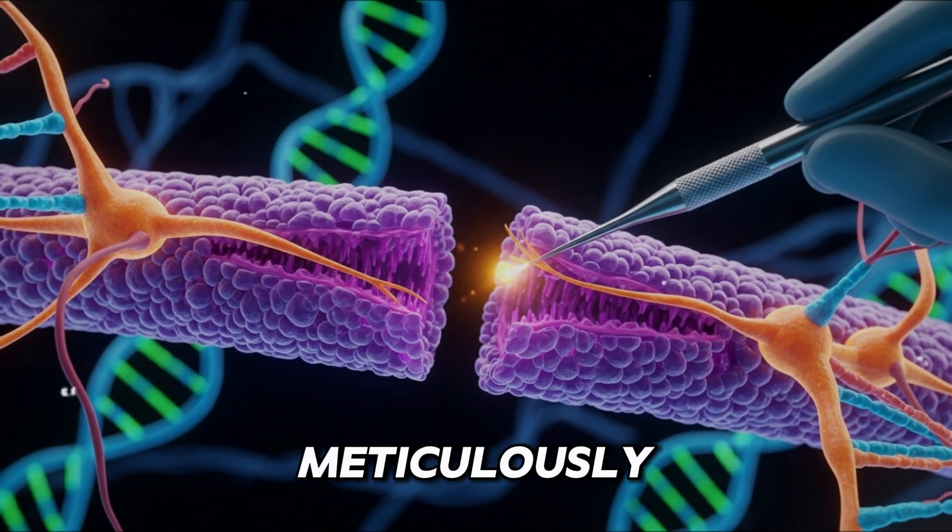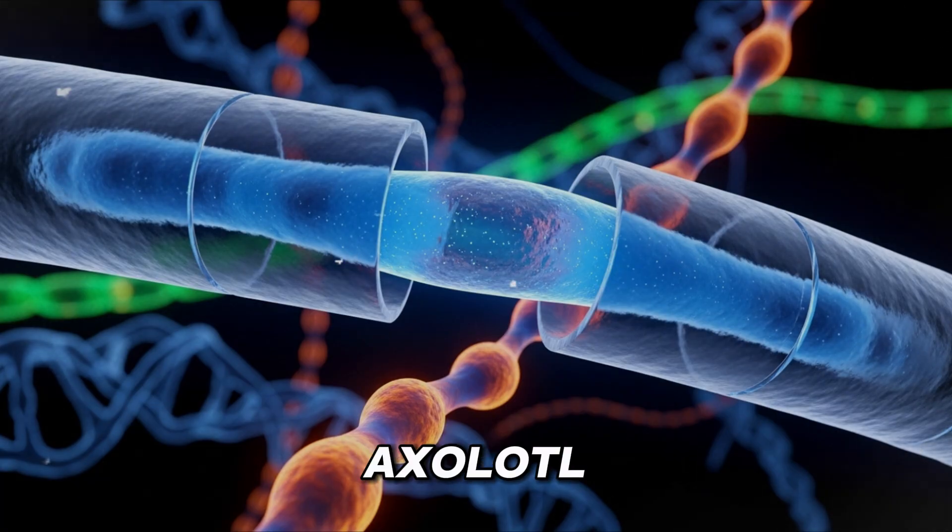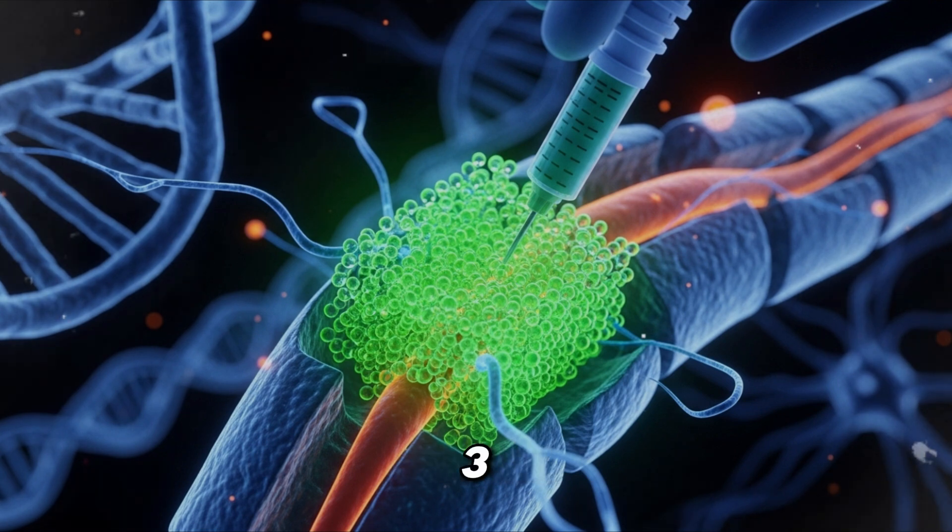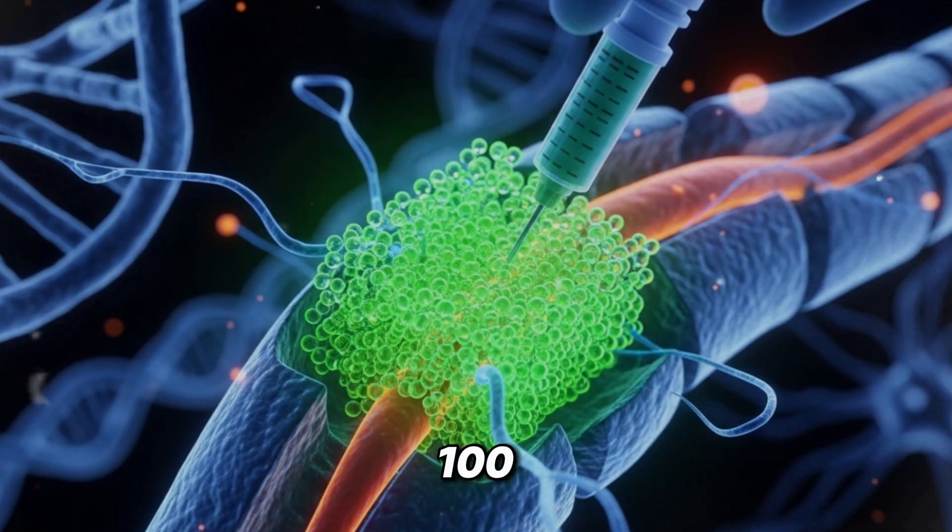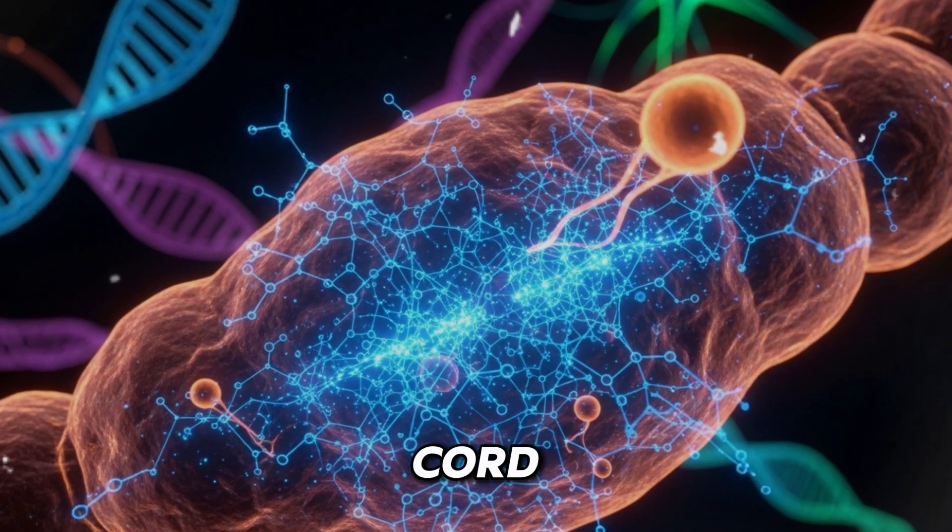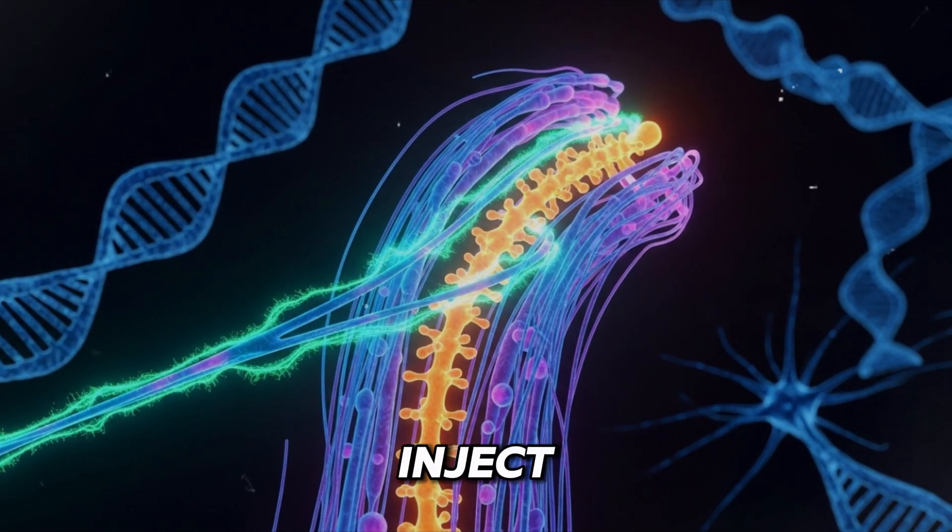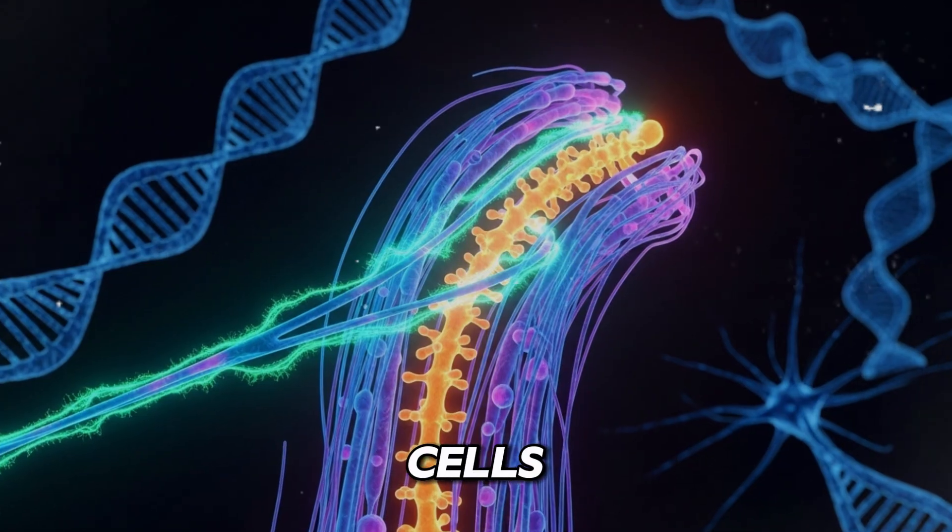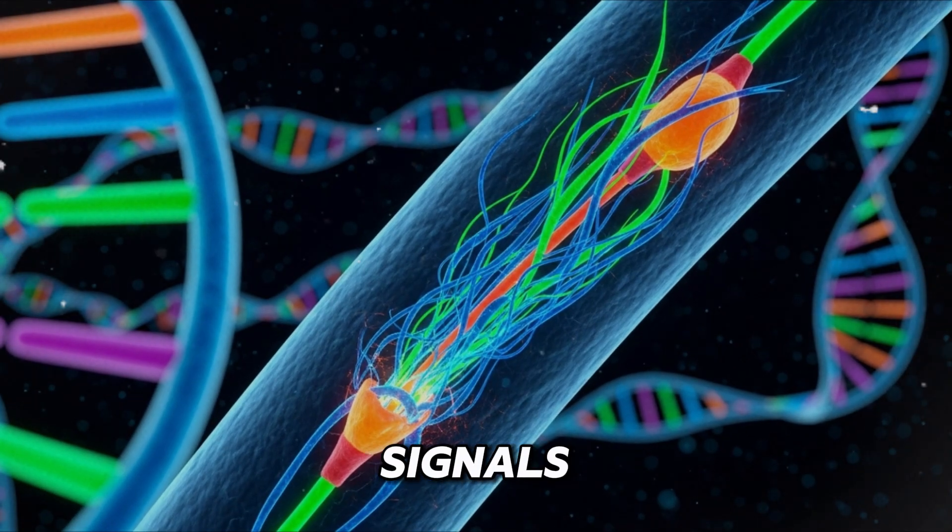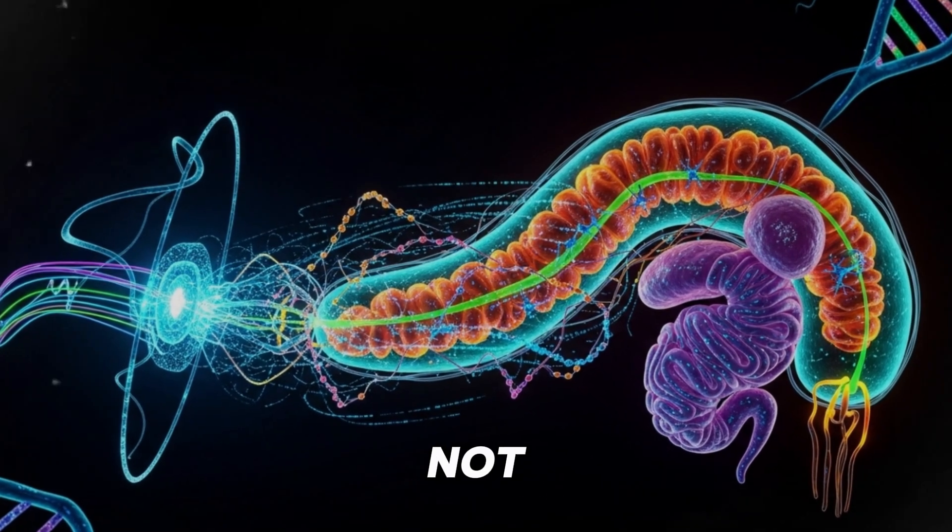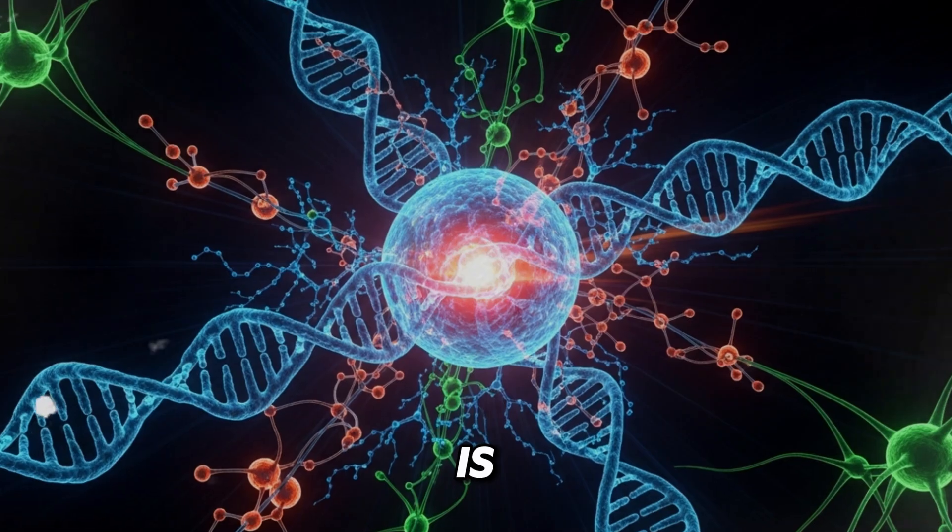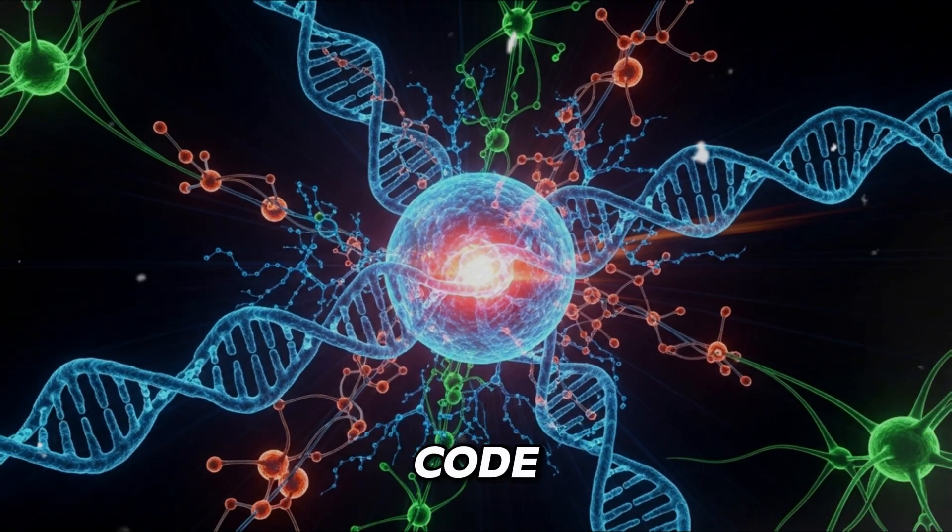Scientists are now meticulously mapping the exact sequence of genetic signals the axolotl uses. Signal 1, become a neuron. Signal 2, grow south towards the hip. Signal 3, connect to that muscle. Within the next 100 years, the cure for paralysis could look like this. A surgeon removes the scar tissue from the severed spinal cord. They apply the anti-scar hydrogel. They inject a matrix of the patient's own reprogrammed stem cells. This matrix is preloaded with the salamander's voice, the precise chemical and genetic signals in the precise order that tell those cells, you are not a blob, you are a spinal cord. Build. This is no longer magic. This is not a miracle. This is biological engineering. This is the salamander code. Unlocked.